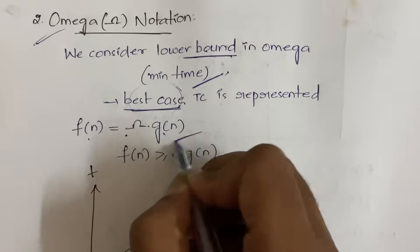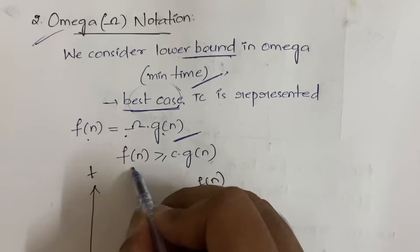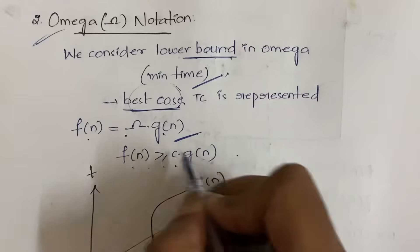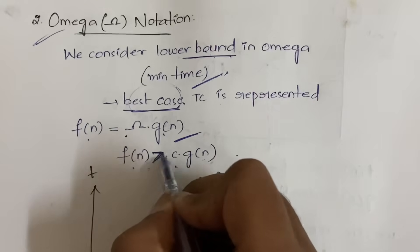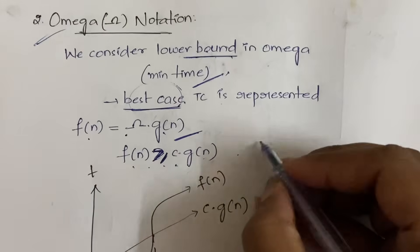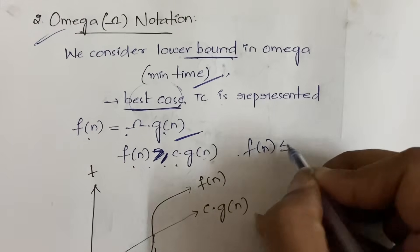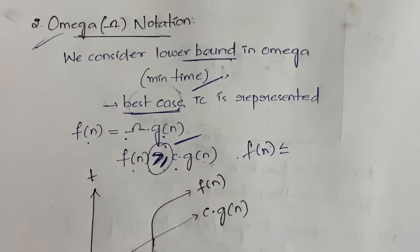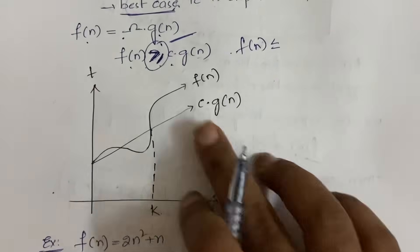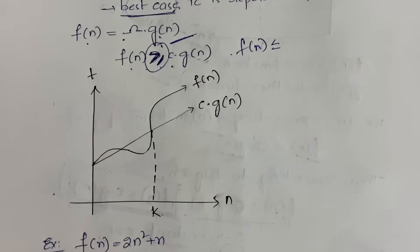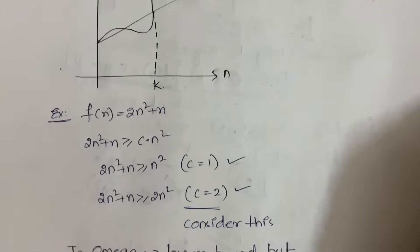In Omega notation, f(n) ≥ c · g(n), so we take greater than or equal to. On the graph, f(n) is above g(n) — opposite to Big O where f(n) was below g(n). Let us apply the same example f(n) = 2n² + n.